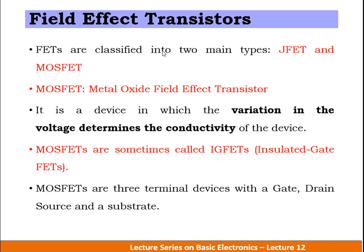FETs are classified into two main types: JFET and MOSFET. MOSFET stands for Metal Oxide Field Effect Transistor. It is a device in which the variation in the applied gate voltage determines the conductivity of the device — that is, the drain current is controlled by the applied gate voltage.